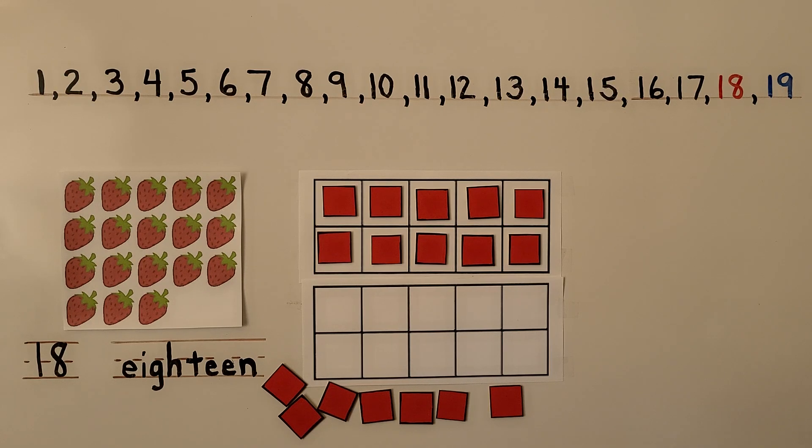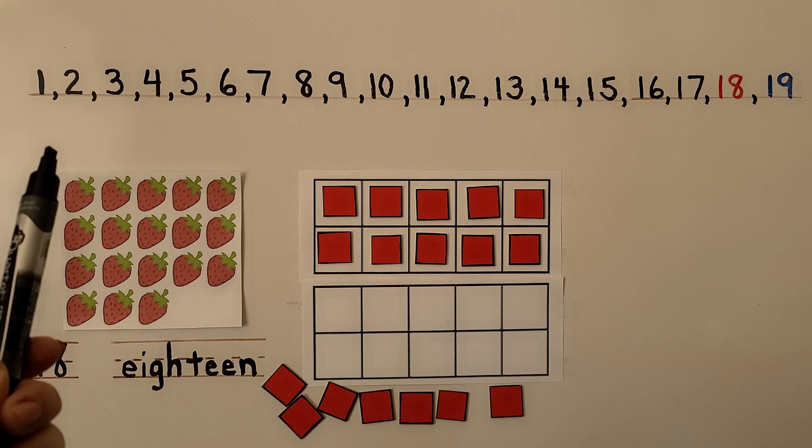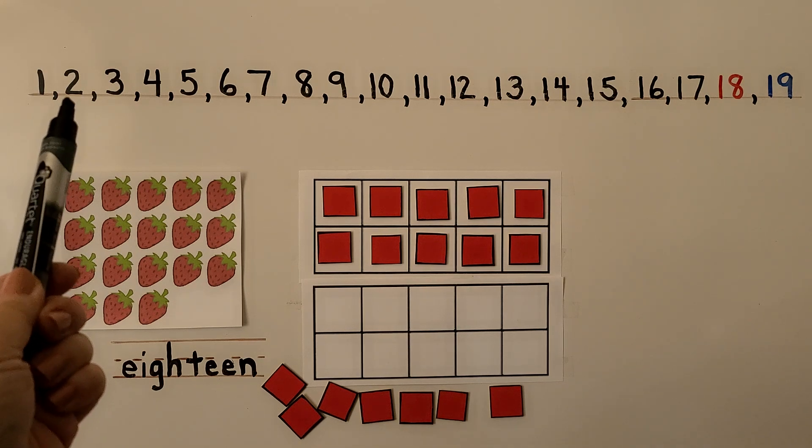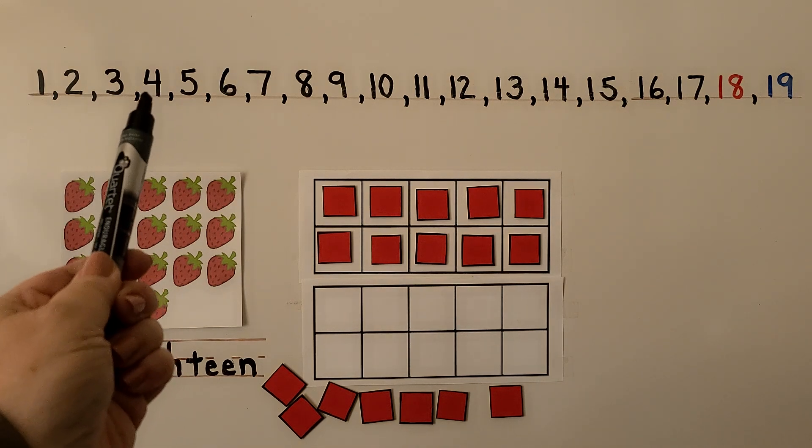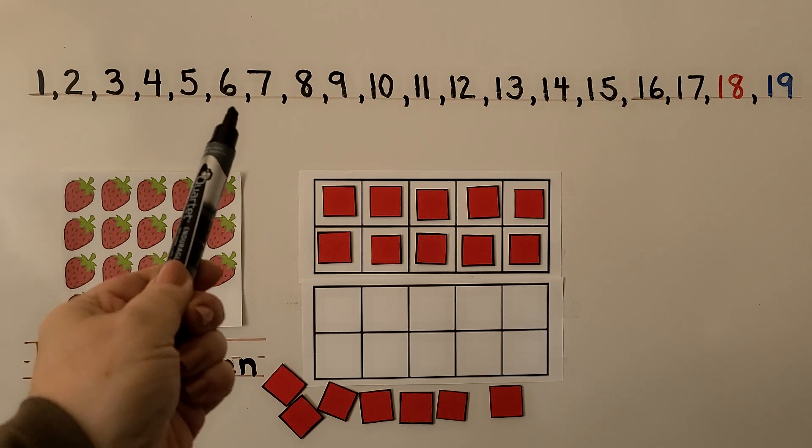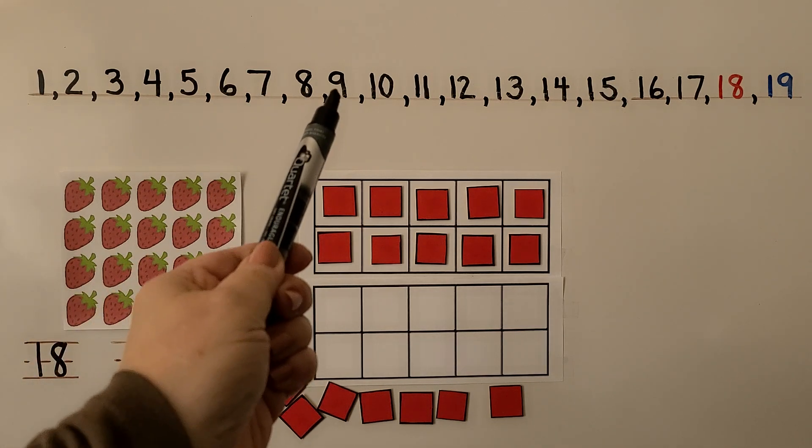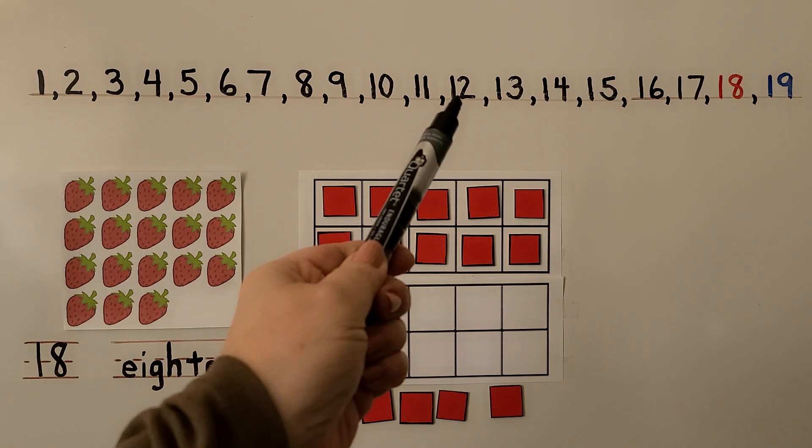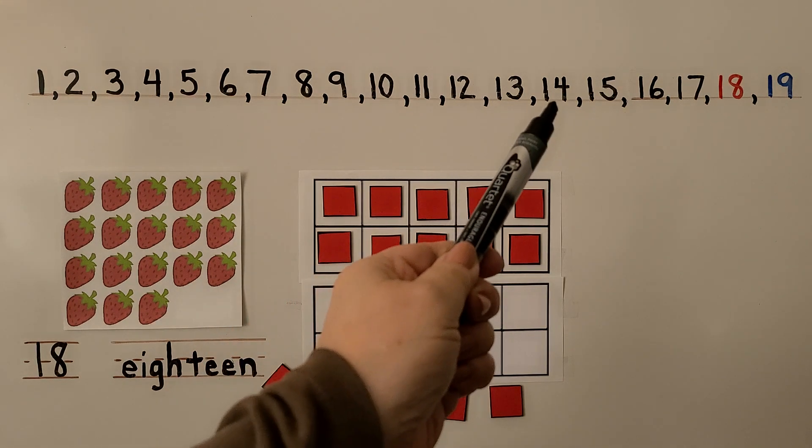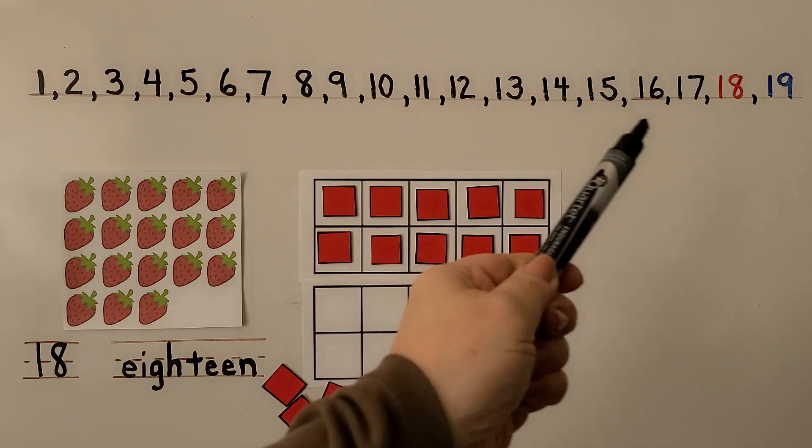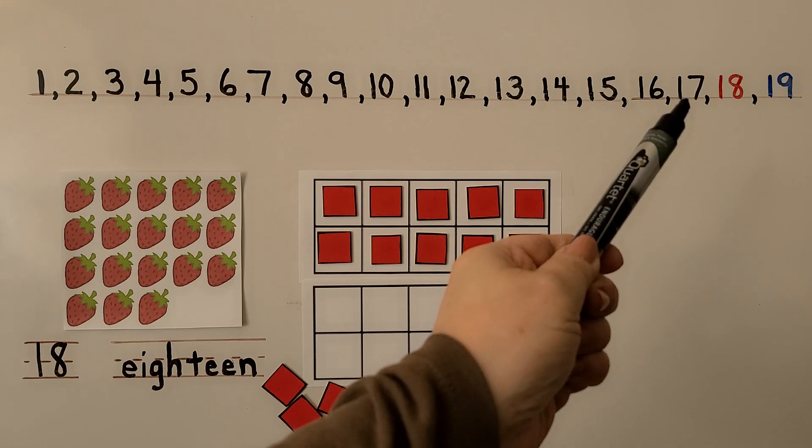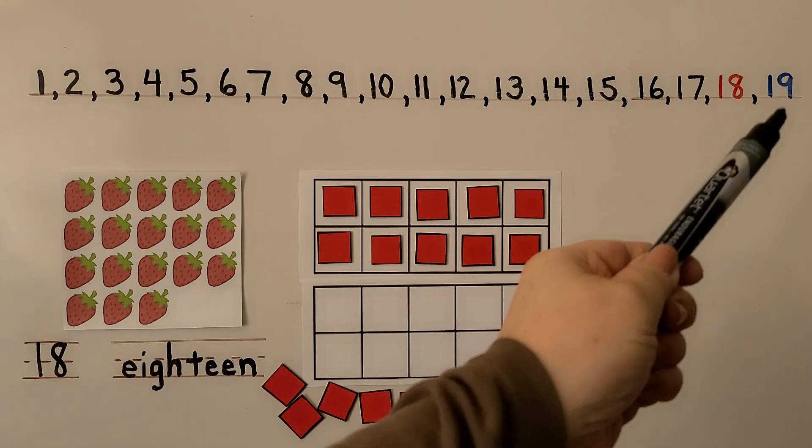We can count to 19. You can count with me. 1, 2, 3, 4, 5, 6, 7, 8, 9, 10, 11, 12, 13, 14, 15, 16, 17, 18, 19.